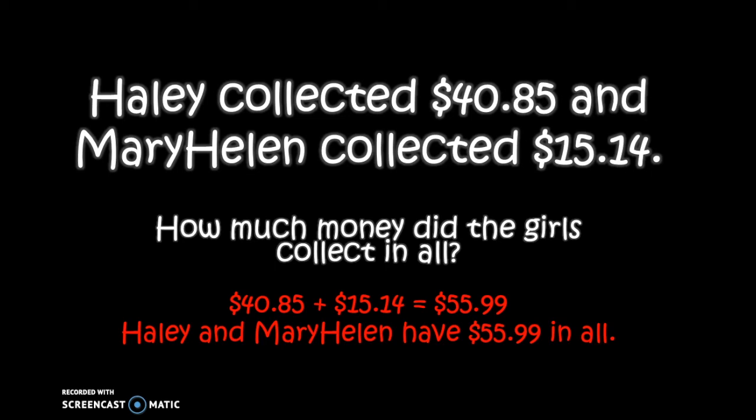Let's go back to our problem. Our number sentence is forty dollars and eighty-five cents plus fifteen dollars and fourteen cents equals fifty-five dollars and ninety-nine cents. Our answer would be that Haley and Mary Helen have fifty-five dollars and ninety-nine cents in all.